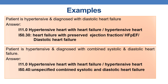Example 3: A hypertensive patient diagnosed with diastolic heart failure is coded as I11.0 and I50.30, which represents heart failure with preserved ejection fraction (HFpEF). For a patient with combined systolic and diastolic heart failure, the codes are I11.0 and I50.40 for unspecified combined systolic and diastolic heart failure.